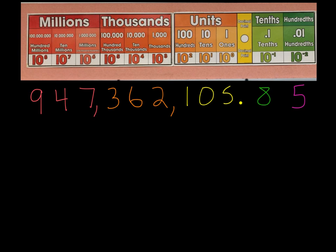To review, let's look at our place value chart. We have our different periods: the ones period (also called units), the thousands period, and the millions period. Each period is separated by a comma. Then our decimal starts a new series — the tenths and the hundredths — which represent fractions of wholes. Pause the video and try reading the number on the chart.